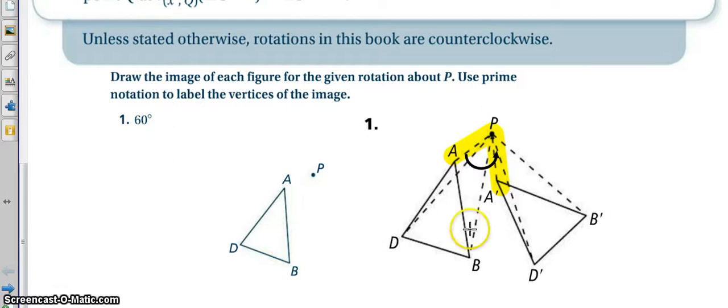We should then get something like this, where if I draw my line to A, and then I draw another line to A prime, that degree rotation will be 60. Same if I go from D to D prime or B to B prime. All of these should be 60 degrees in the counterclockwise direction.